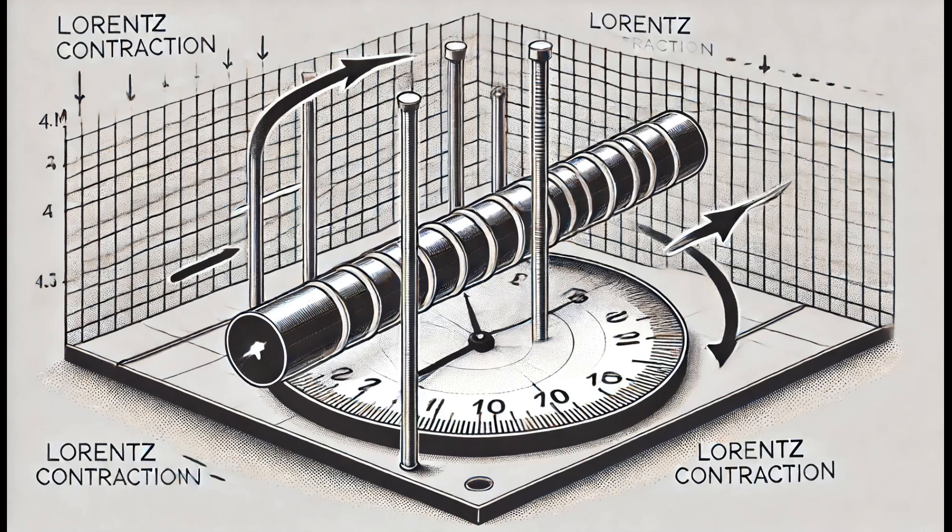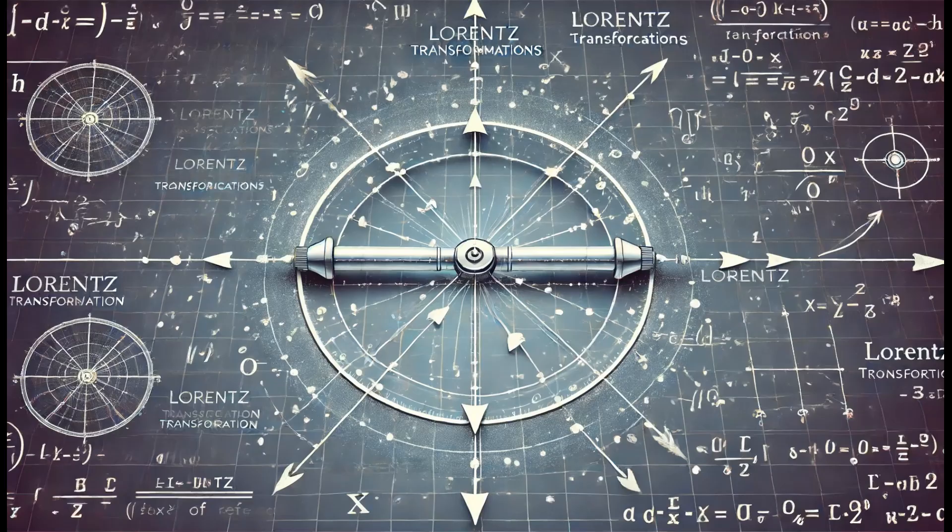Consider a rod whose ends are positioned at two points in the first frame of reference. The length of this rod is measured by placing it next to a ruler and noting the points where its ends coincide with the marks on the ruler. We use Lorentz transformations to understand how this length is perceived in a second frame of reference, which is moving relative to the first. These transformations relate the coordinates and times of events between the two frames, taking into account the relative speed and the constant speed of light.